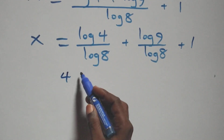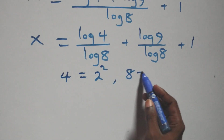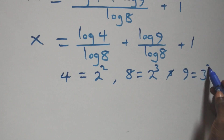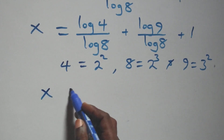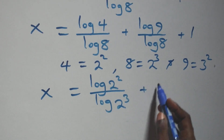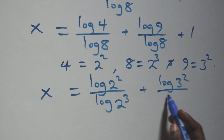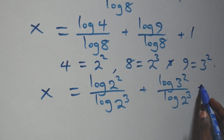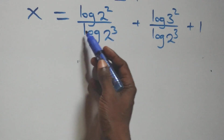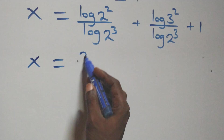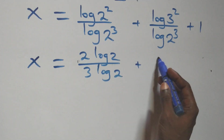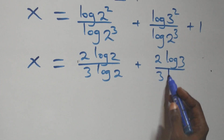We write 4 as 2 squared, 8 as 2 cubed, and 9 as 3 squared. Applying the power rule of logarithms, 2 comes down from log 4, and 3 comes down from log 8 and log 9 respectively. This gives x equals 2 log 2 over 3 log 2 plus 2 log 3 over 3 log 2 plus 1.